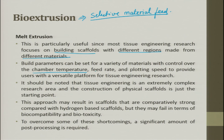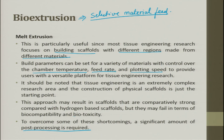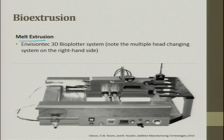This is particularly useful since most tissue engineering research focuses on building scaffolds with different regions made from different materials — selective material feed. Chamber temperature ensures proper bonding, combined with feed rate and plotting speed control. It should be noted that tissue engineering is an extremely complex research area and the construction of a physical scaffold is just a starting point. To overcome shortcomings in biocompatibility and biotoxicity, significant post-processing such as coating the scaffold is required. A bio plotter is used — cartridges hold the material and the build table is used for the process.